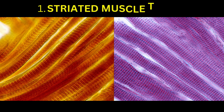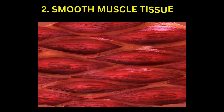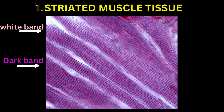There are two main forms of muscle tissue: striated muscle tissue and smooth muscle tissue. Striated muscle tissue has a striped or striated appearance under a microscope due to the alternating arrangement of dark and light bands.